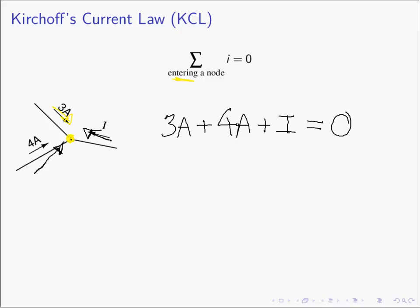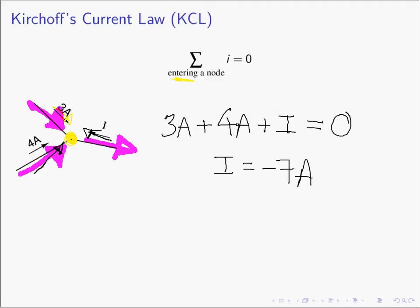Evaluating this expression, i is equal to negative seven amperes. Just as before, if we have three coulombs per second going one way and four coulombs per second going another way, we must have seven coulombs per second — seven amperes — going off to the right to account for all charges. Since we were asked for the current going to the left, i is the negative of that, giving us i equals negative seven amperes.